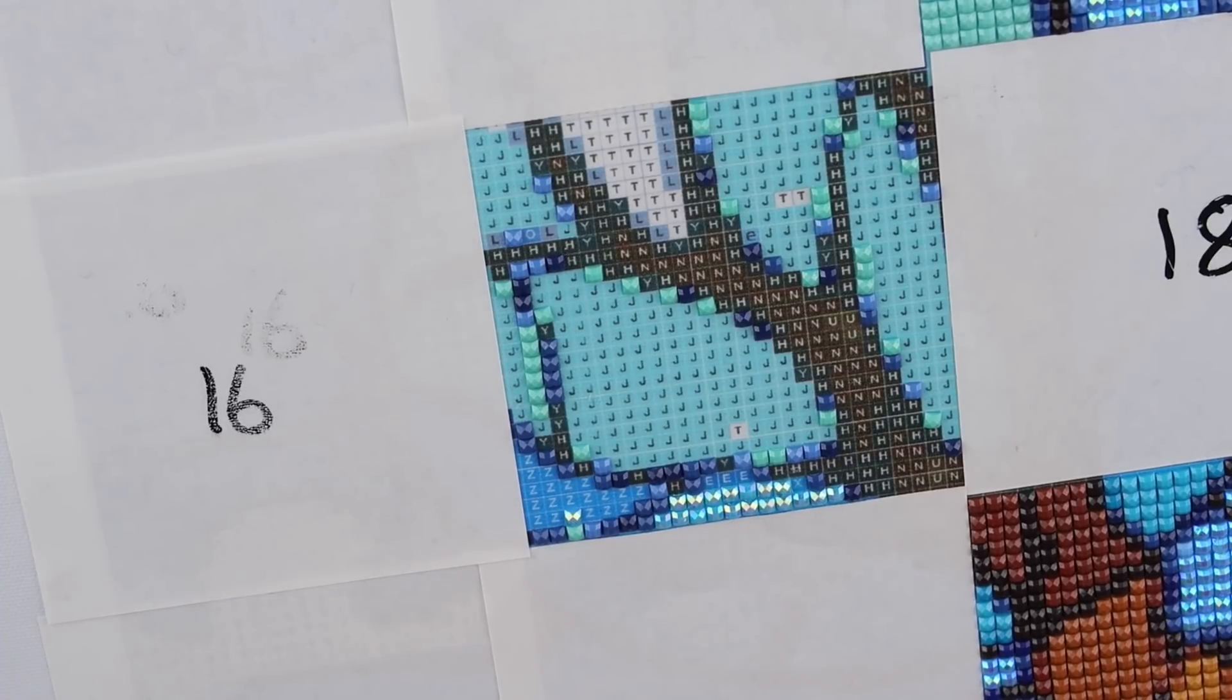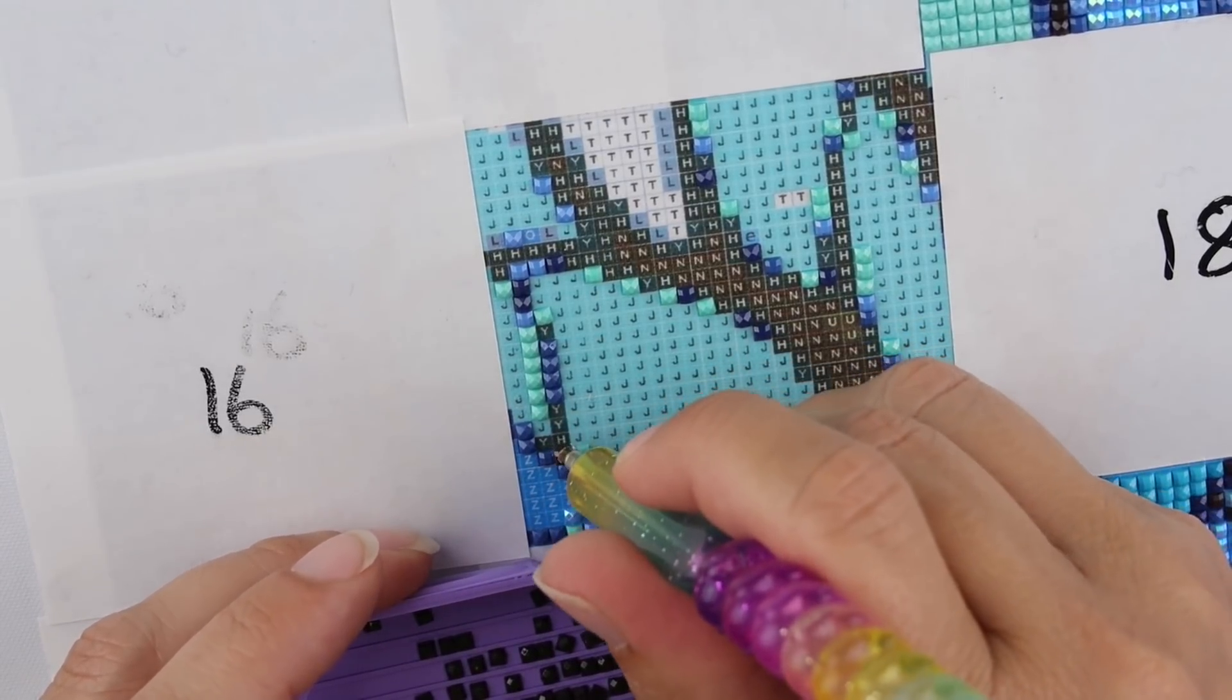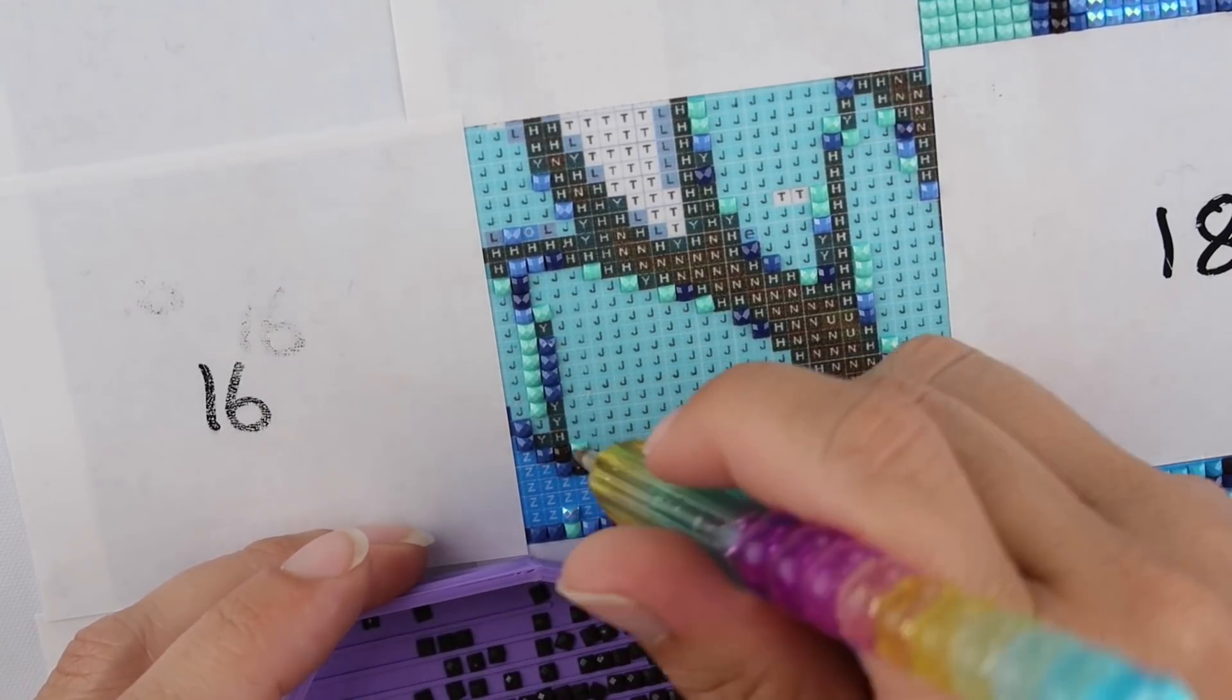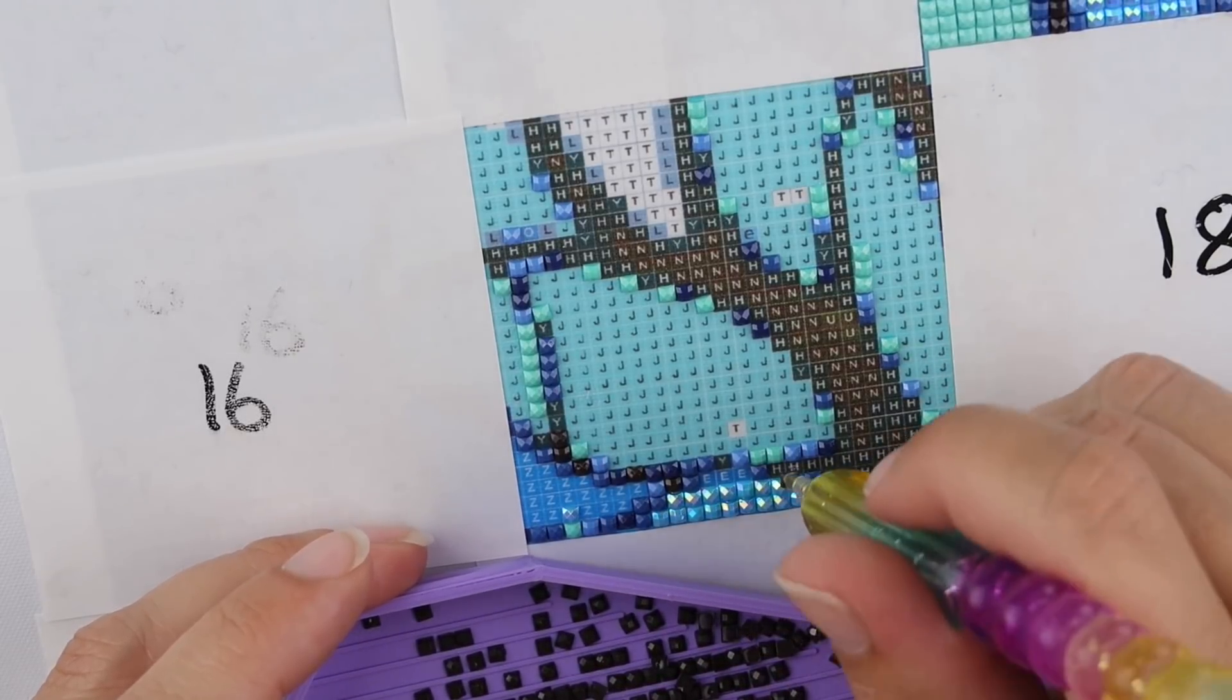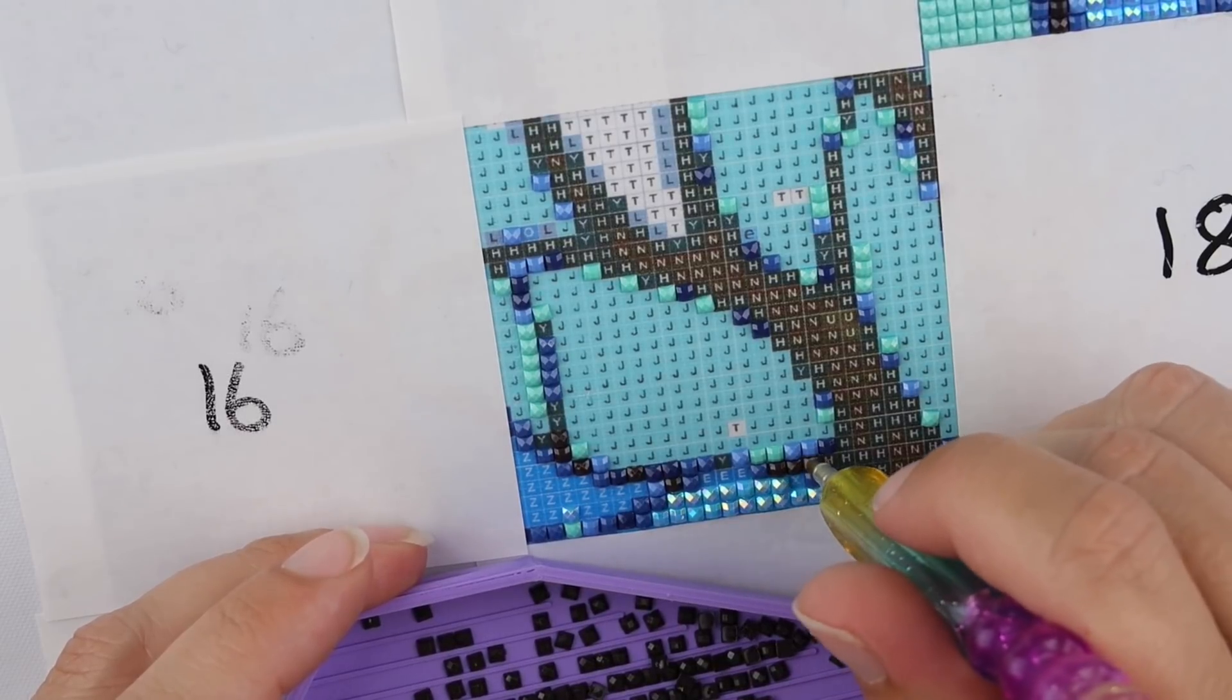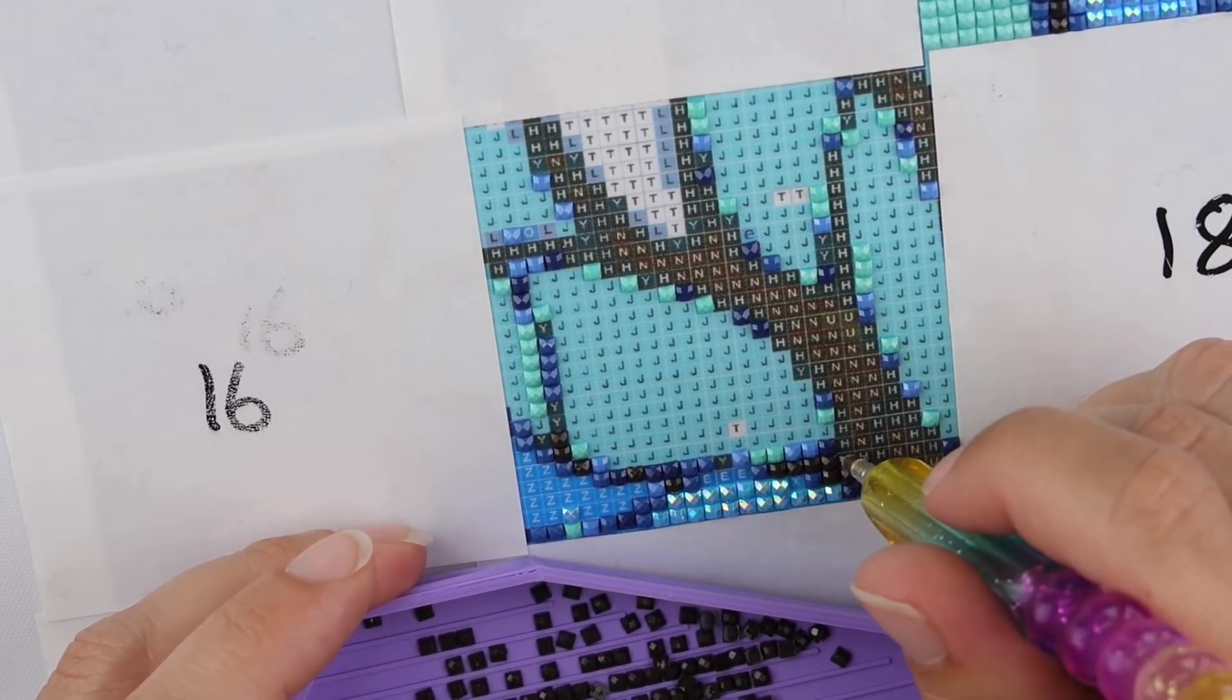So I'm just going to tip those back in and get out my letter H. Now for those of you that are watching the video rather than just listening, you may have noticed that I'm currently using a different coloured tray. And that is because the first limited edition colour tray, which in this case is purple, has finished printing.